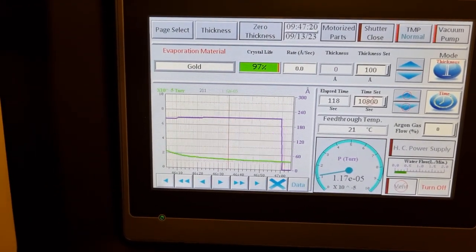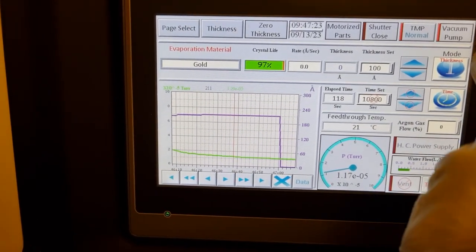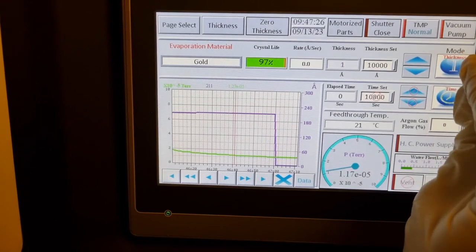We'll zero the thickness sensor. We set it to the thickness mode and set the desired thickness.